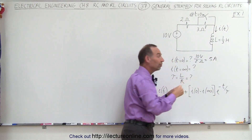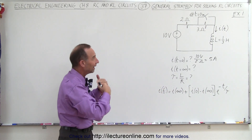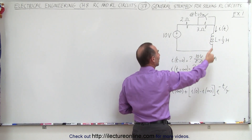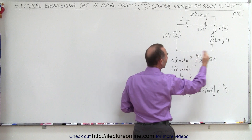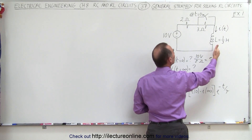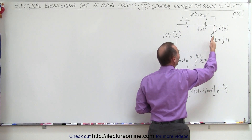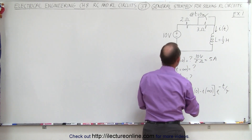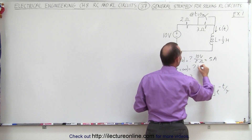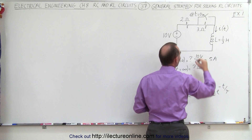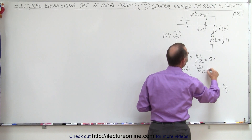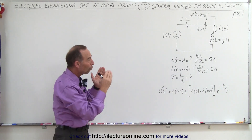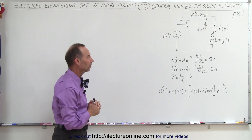The moment before the switch opens and the moment after the switch opens, the current is 5 amps. Then the inductor is going to try to find the change in the current, and finally the current will reach its final value. When equilibrium is reached, the current through the inductor will be unchanged, and the current through the entire circuit will be 10 volts from the source divided by the total resistance of 5 ohms, so the current is down to 2 amps. The current will change from 5 amps to 2 amps over about 5 time constants.